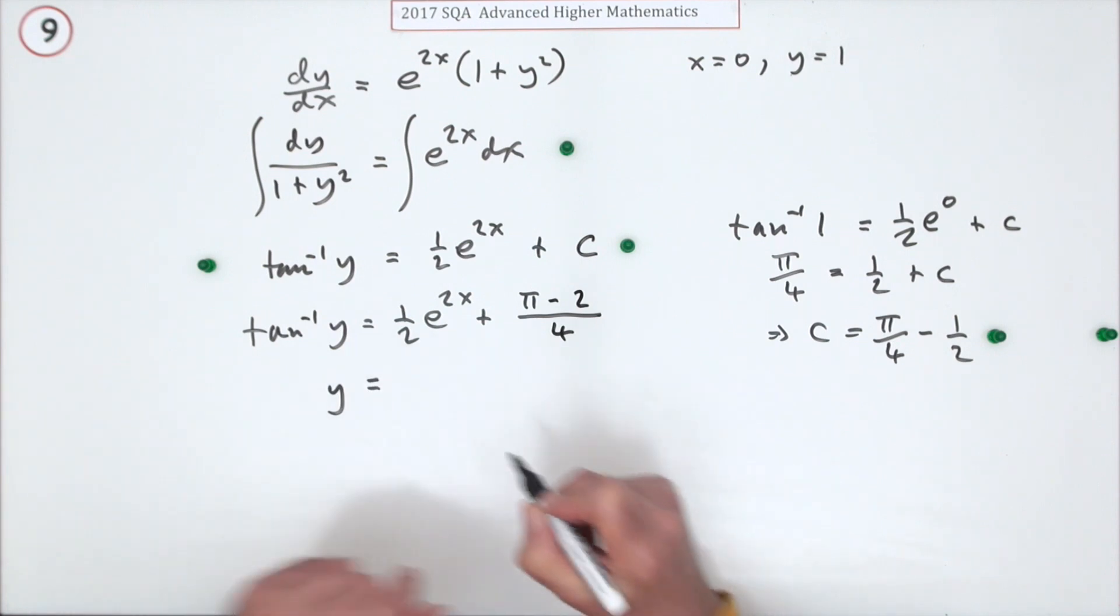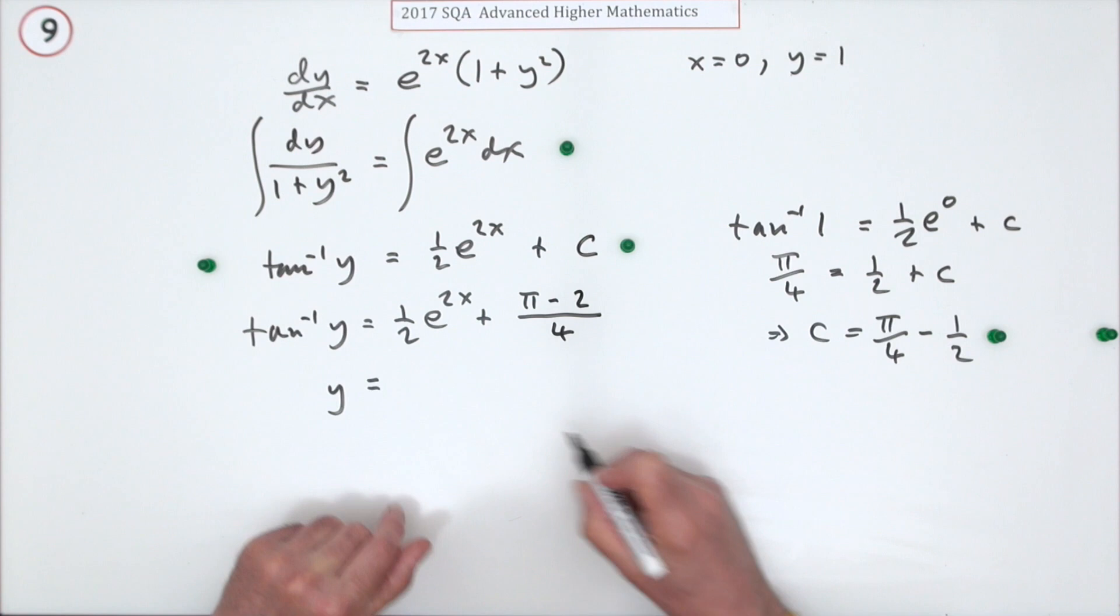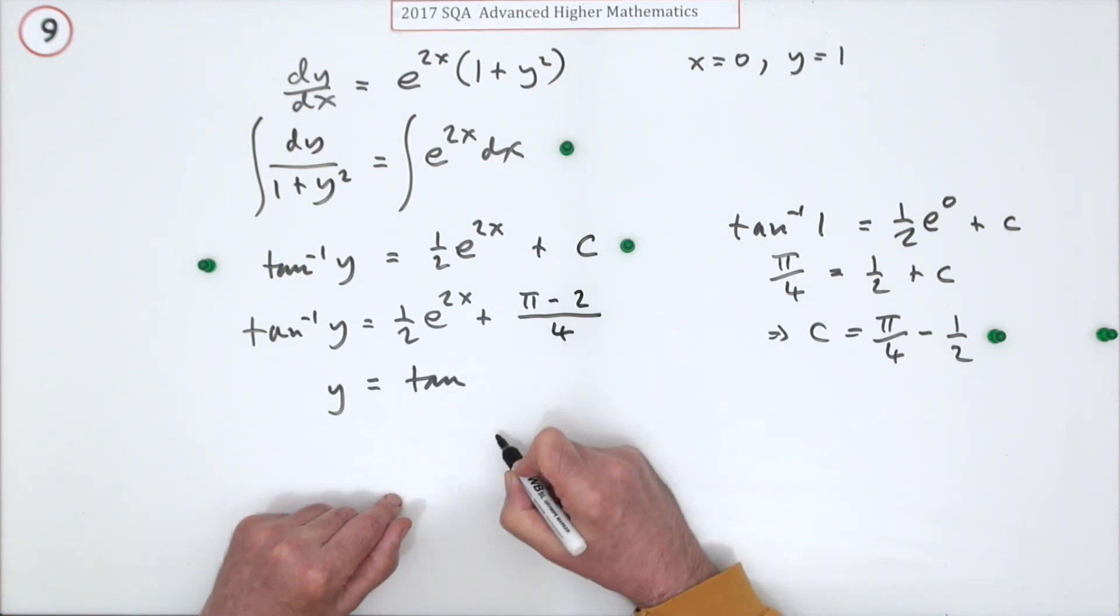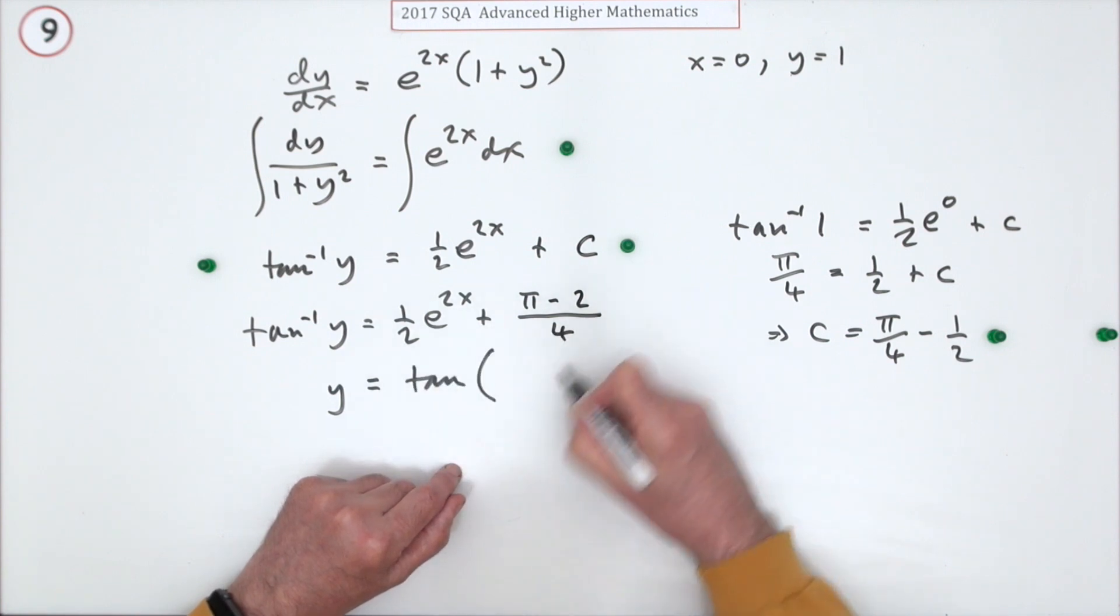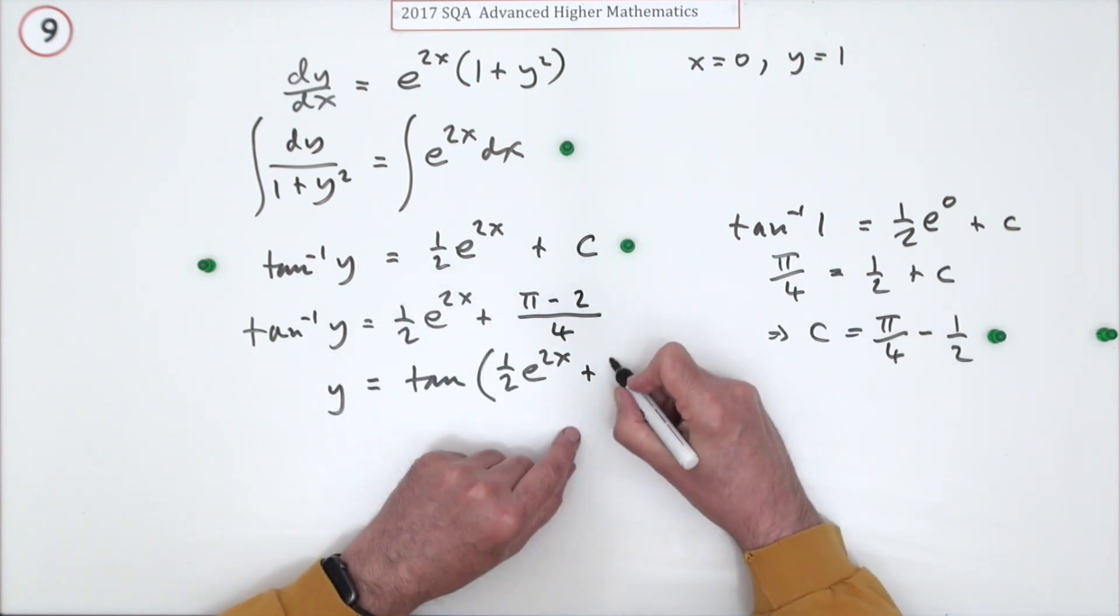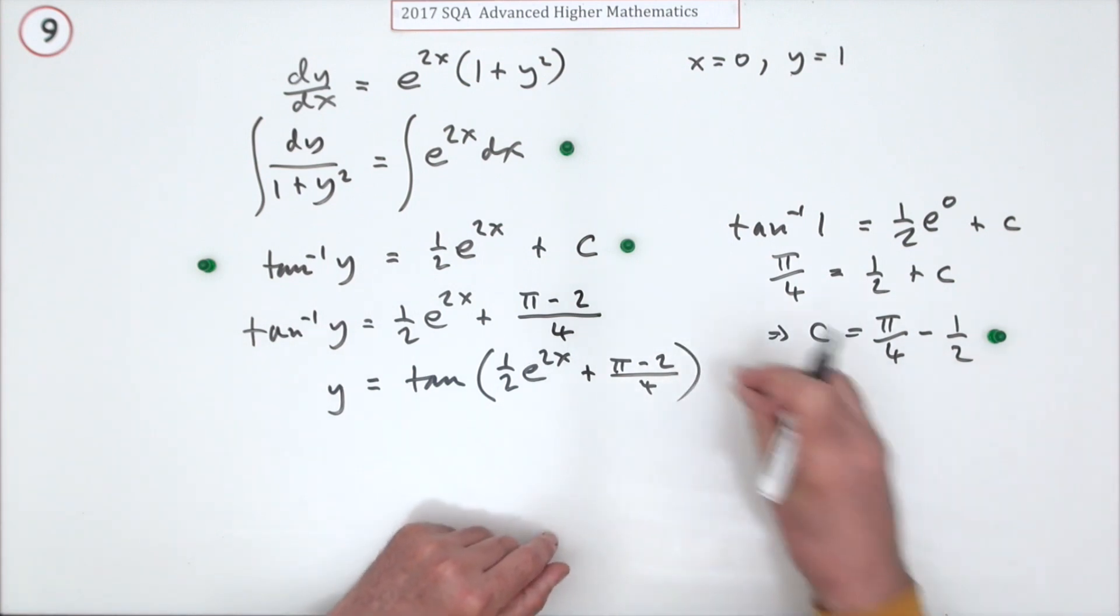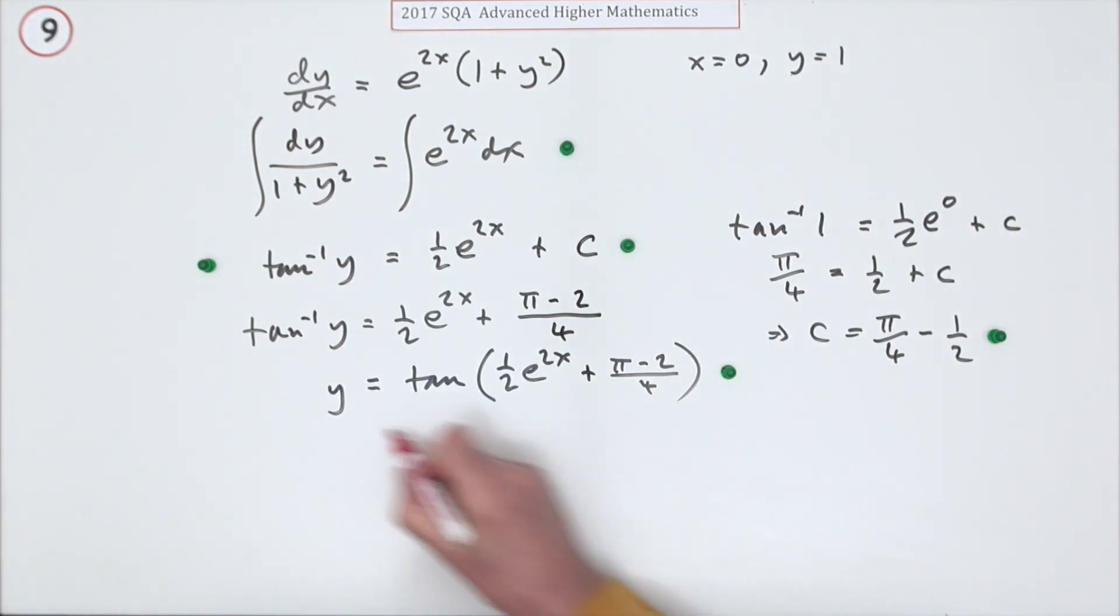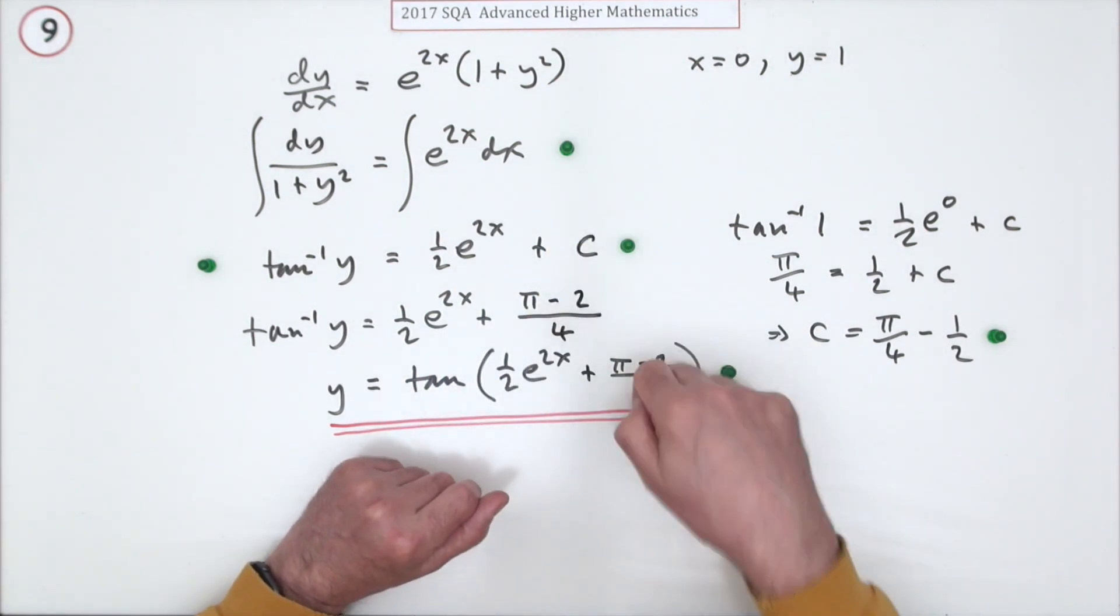Now you can get y in terms of x by applying the inverse of tan. The inverse of tan which of course just goes back to tan. And there's not a lot you can do apart from say tan of this side. Tan of a half of e to the 2x plus whichever way whether you left it separate or put them together. I'll just leave them together. There's the last mark now. Now that should have been a quick and easy five marks to add to the pot.